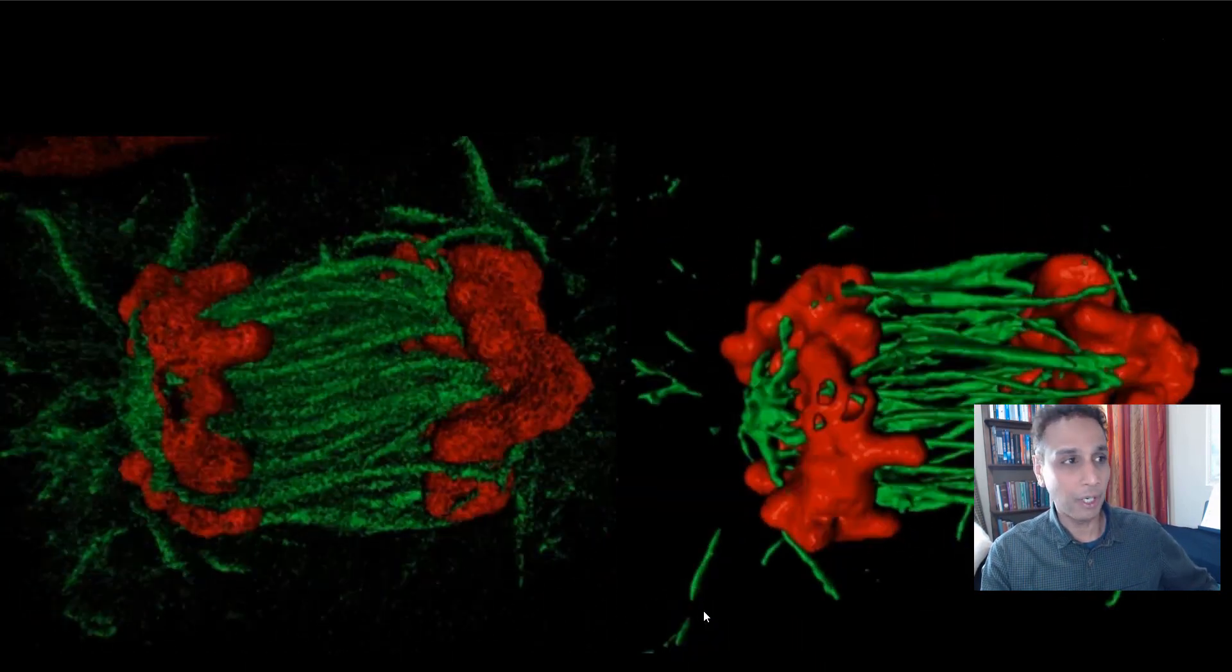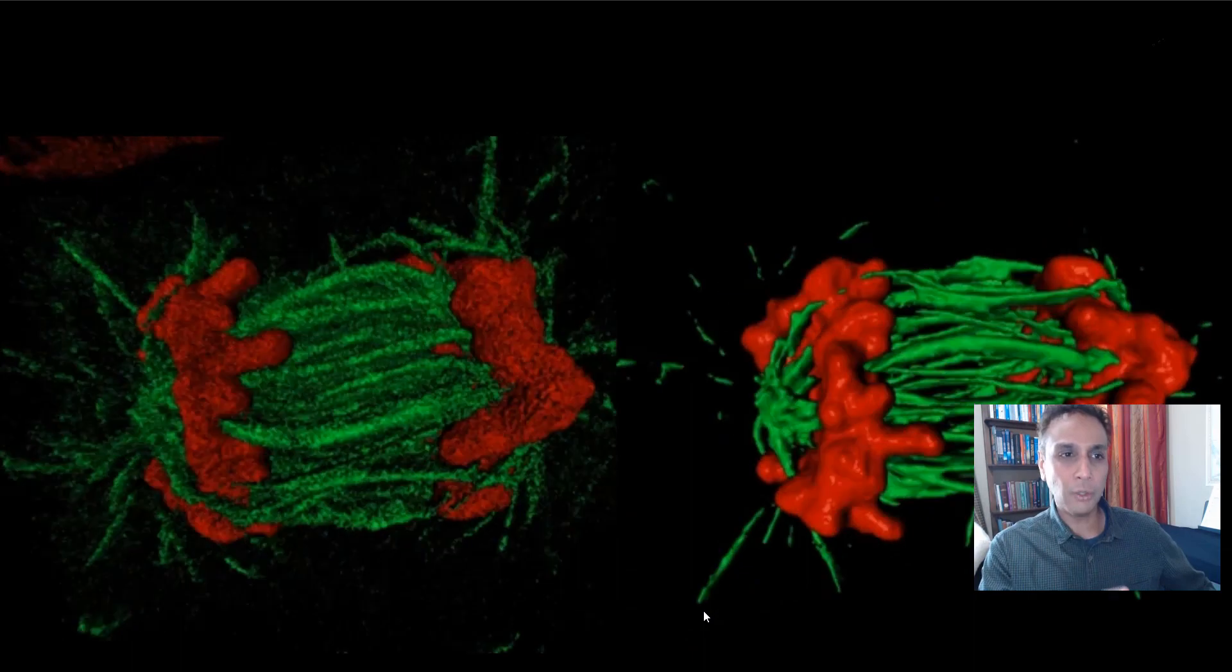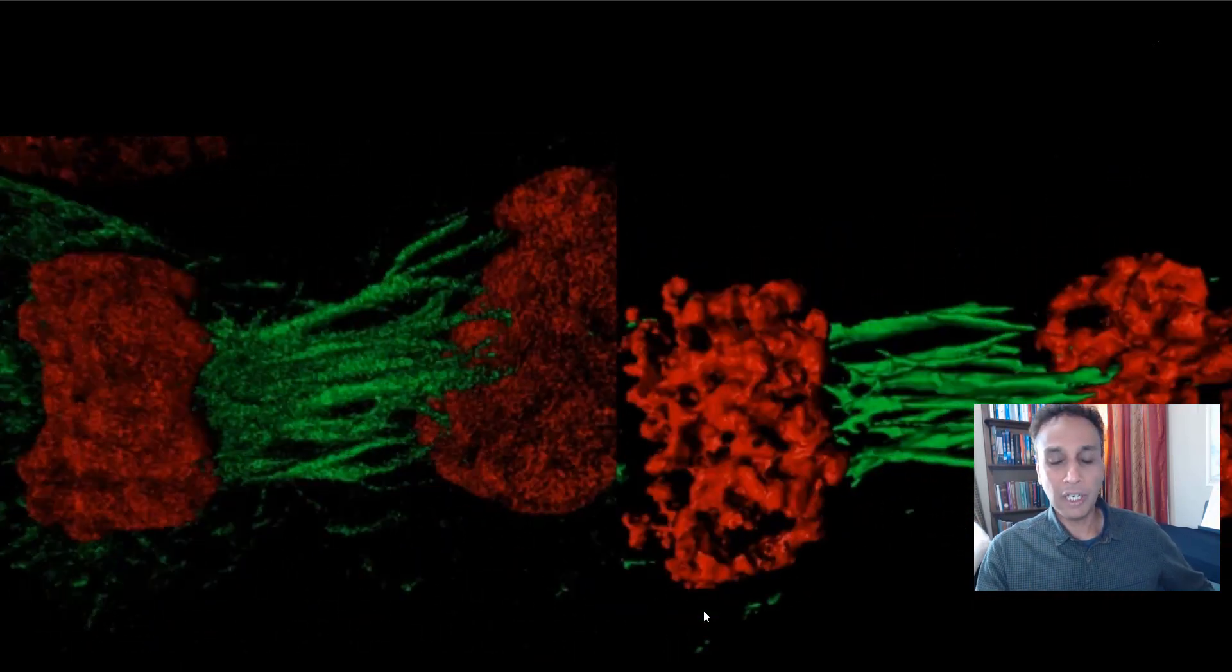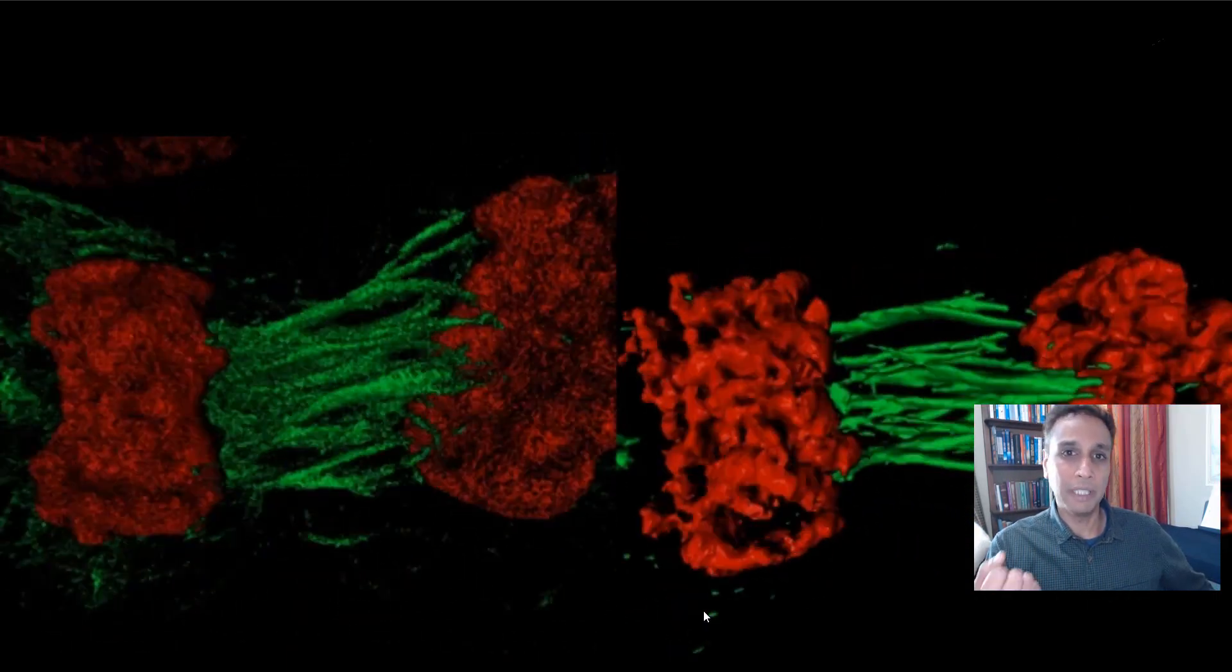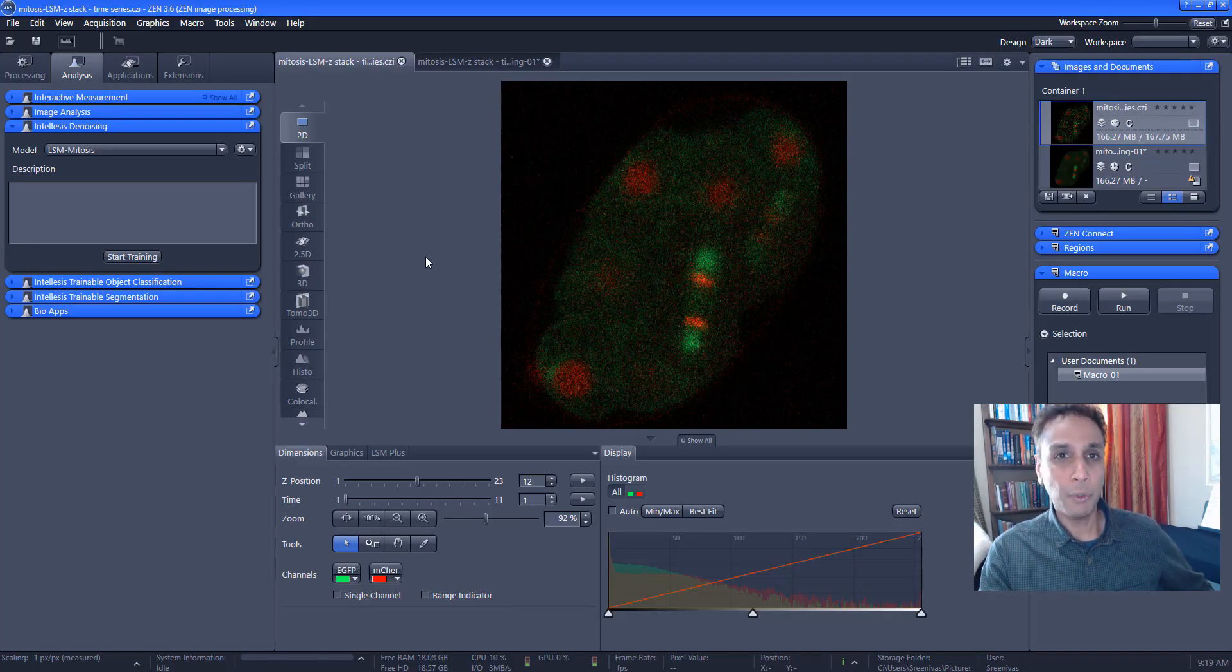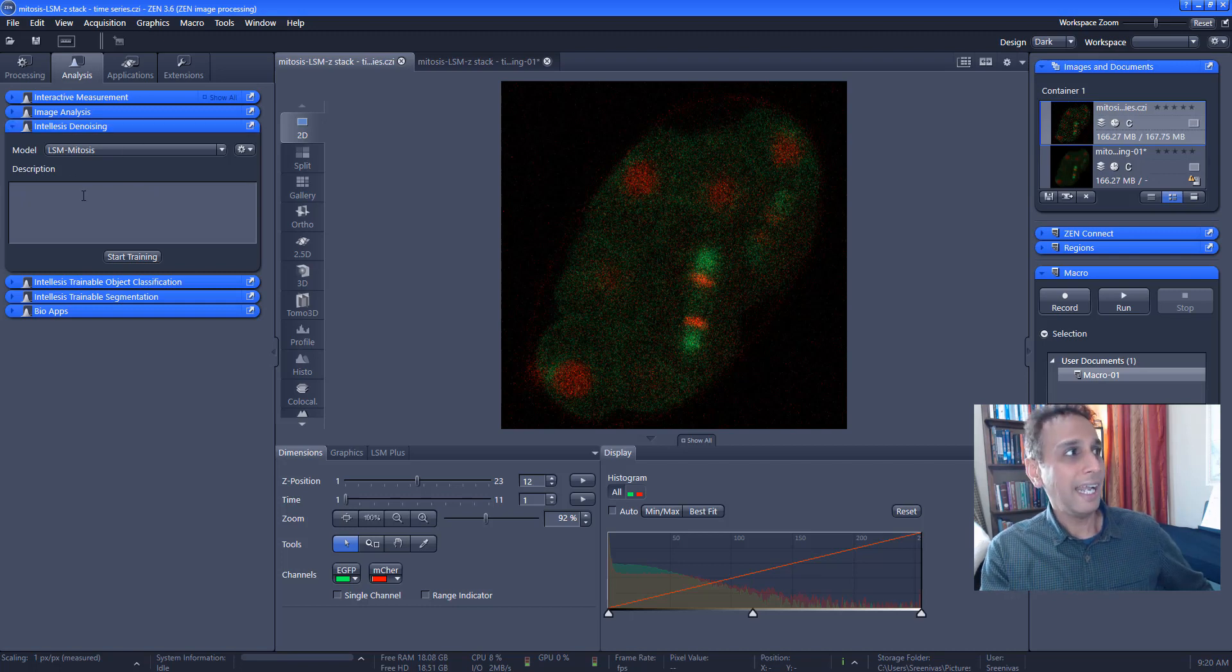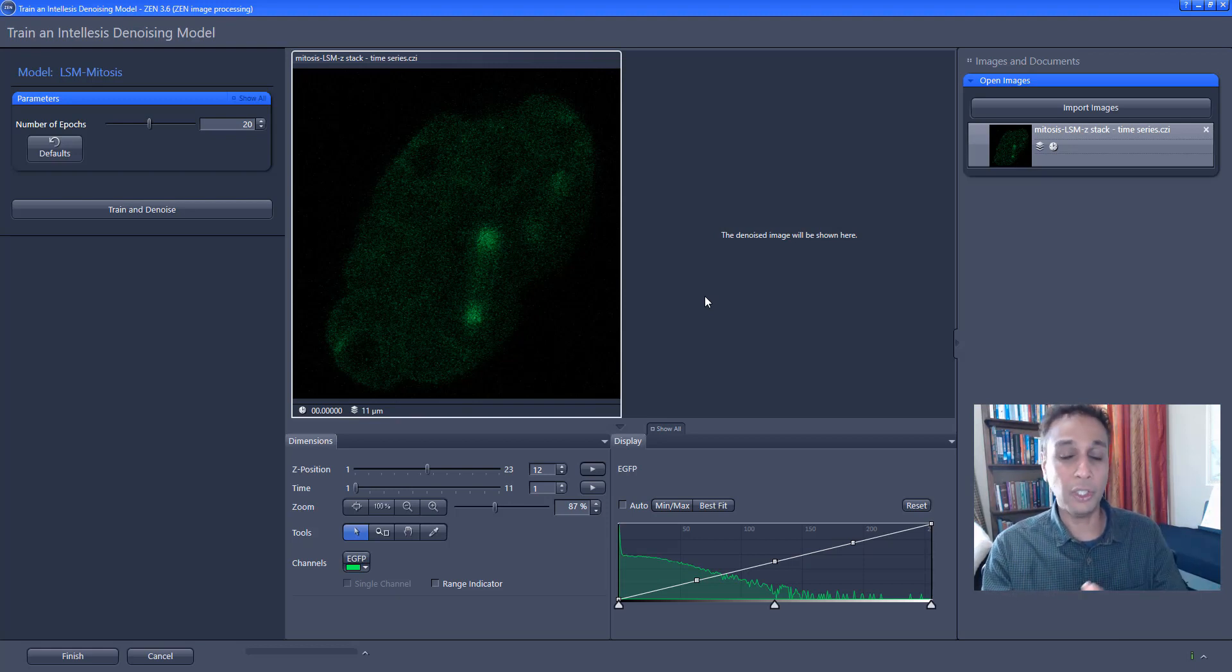So let me quickly jump into Zen to show you. This is not a demonstration of Zen. I don't want to, I'm not trying to sell you anything. Although if you would like to purchase this Noise2Void and you want a click solution and not code anything yourself, there are a couple of ways. I believe you can use it in ImageJ for free. Of course, if you have very large multi-dimensional datasets, you can use it in commercial software, something like Zen. You pay something, I have no clue how much it costs, but I'm going to show you how you can use it. And I'll keep this pretty fast because I know most of you may not have Zen, but if you do, consider upgrading to version 3.6 because that's where you will find this IntelliSense denoising module.